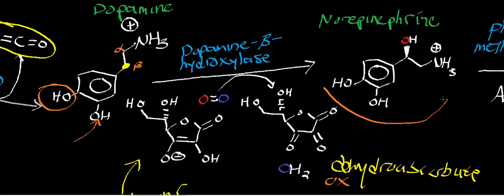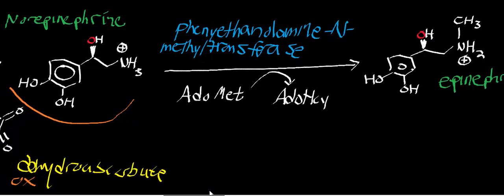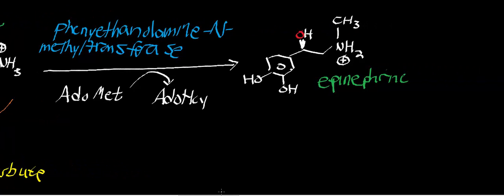Let's discuss why it's called norepinephrine. When you look at the name epinephrine, it means synthesized by a structure above the nephron — thus the name epinephrine. Epinephrine is synthesized by the adrenal medulla, which sits on top of the kidney. The central part of the adrenal gland is the adrenal medulla, and that's the part that synthesizes epinephrine. Epi means above, so above the nephron — that's where the name epinephrine comes from. It ends in "-ine" because it's an amine.